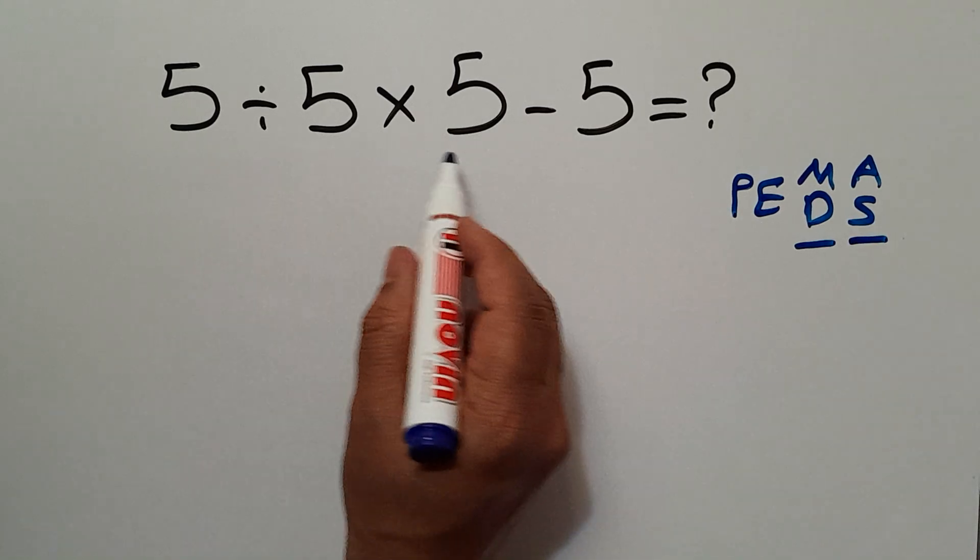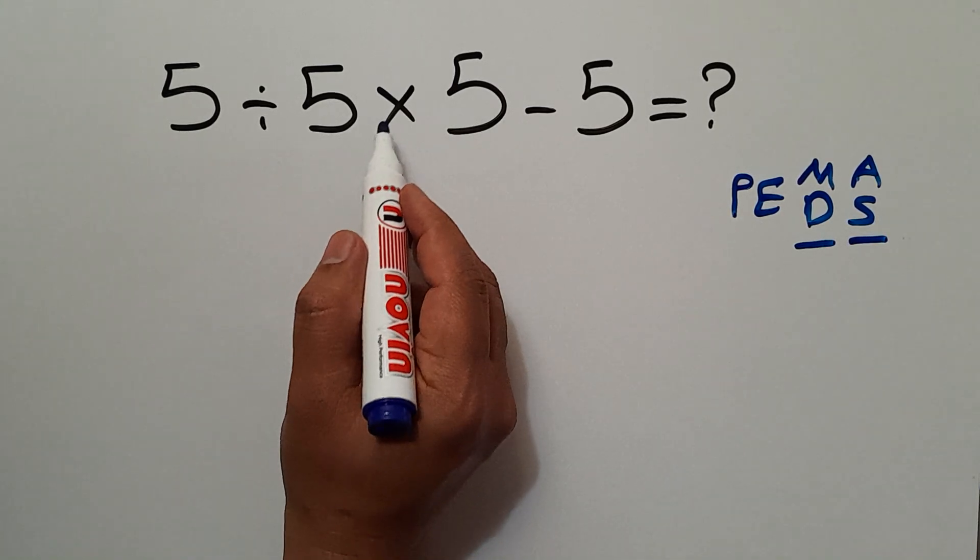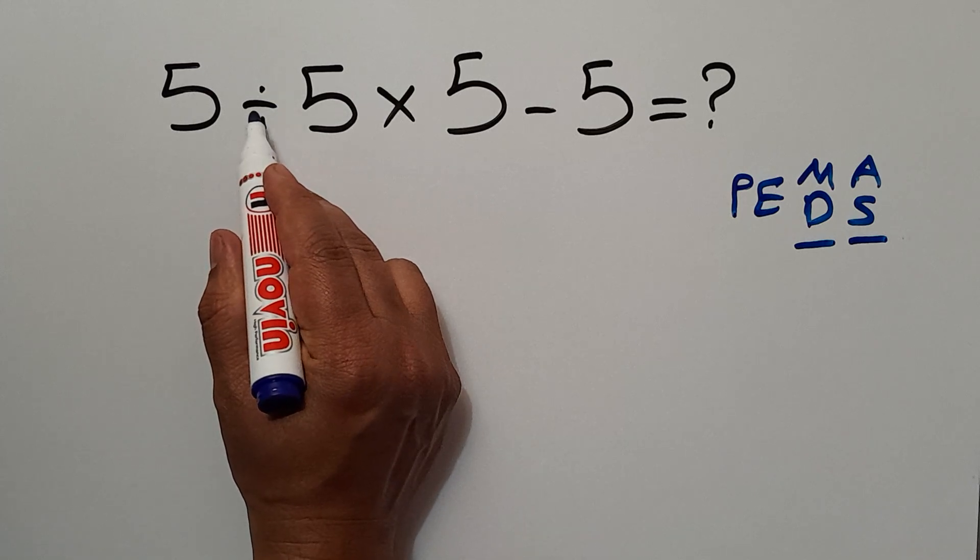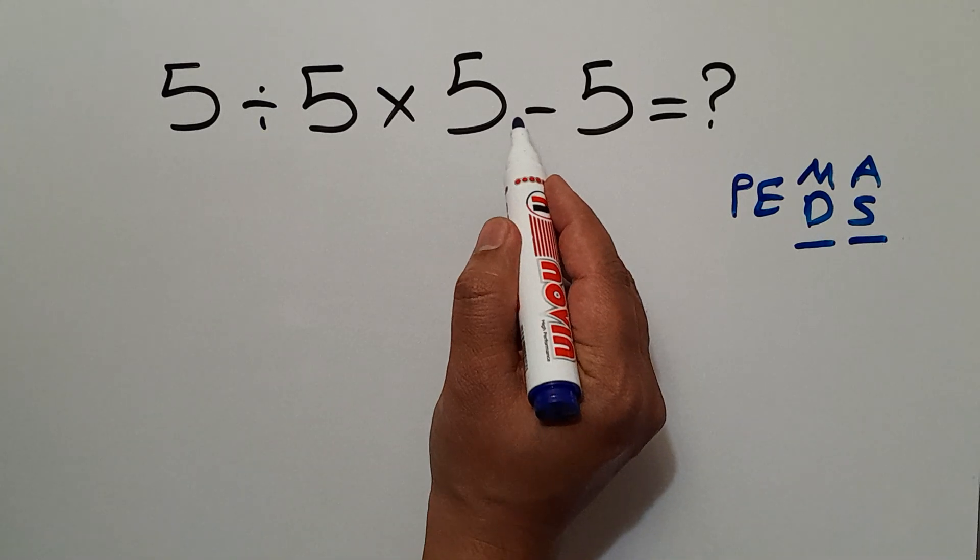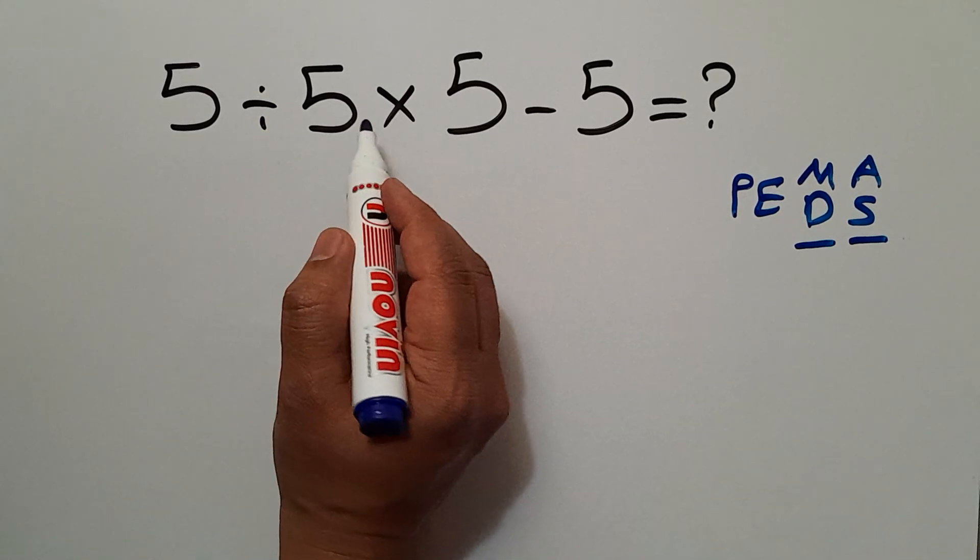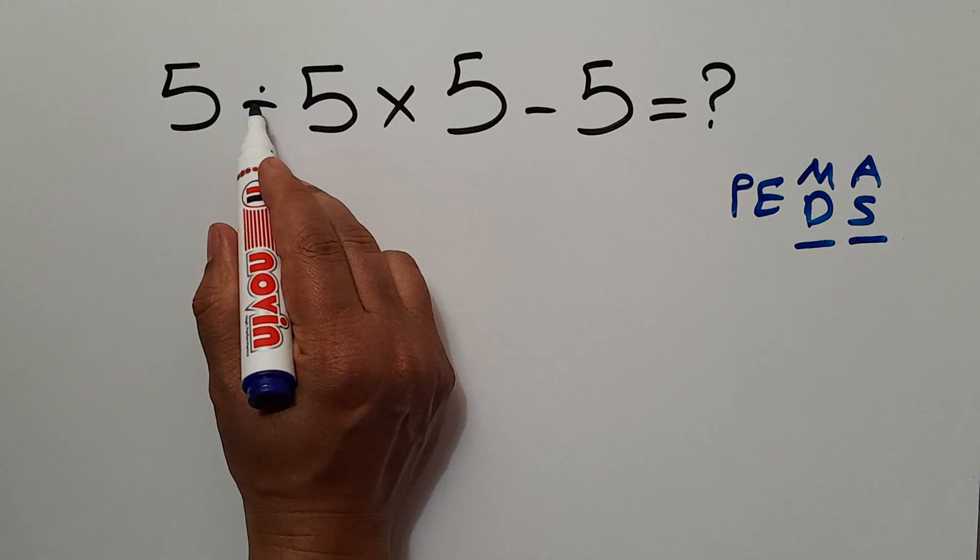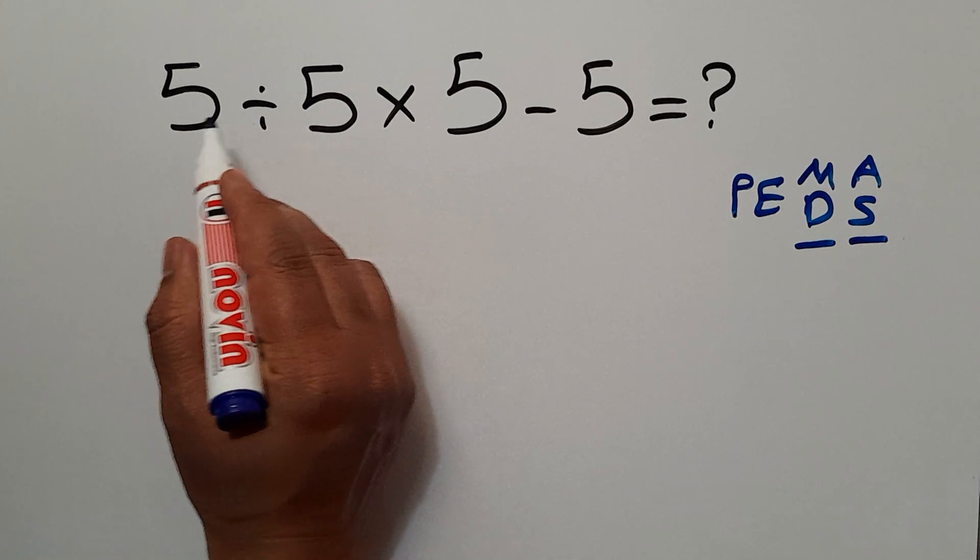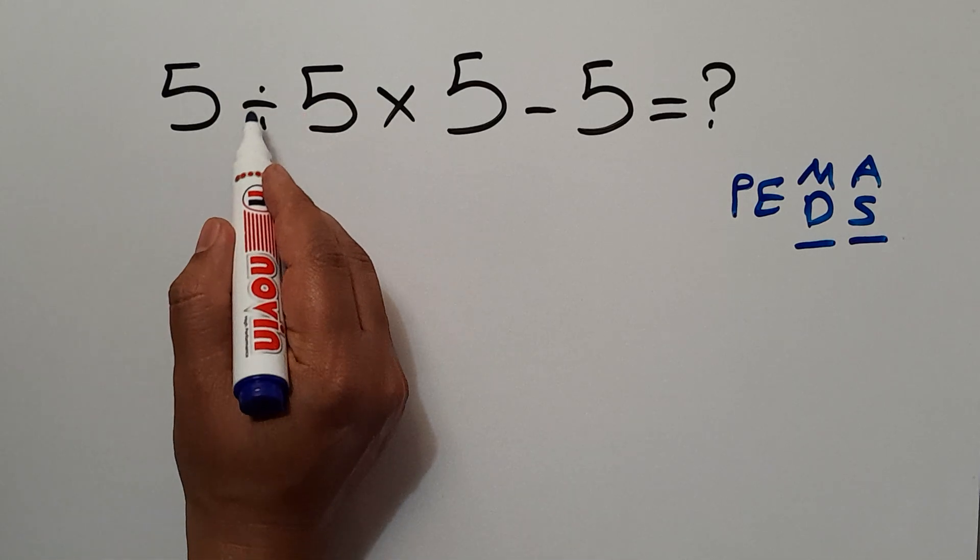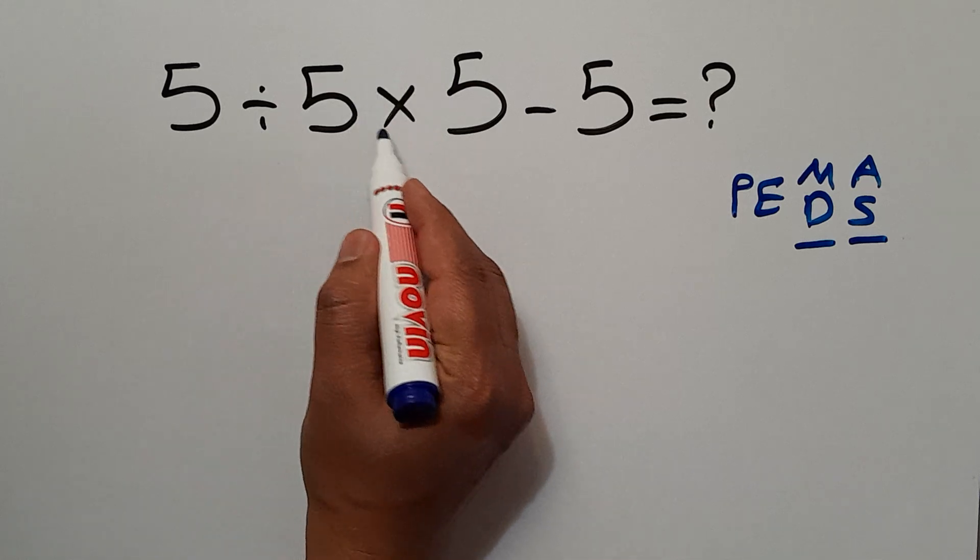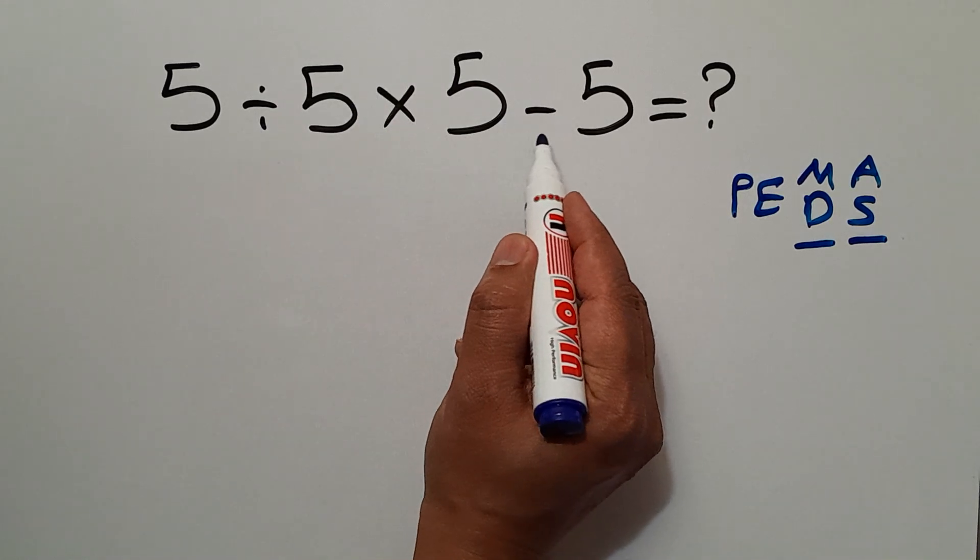So here, multiplication and division have higher priority than subtraction. And also, multiplication and division have equal priority, and we have to work from left to right. So first, this division, then this multiplication, and finally, this subtraction.